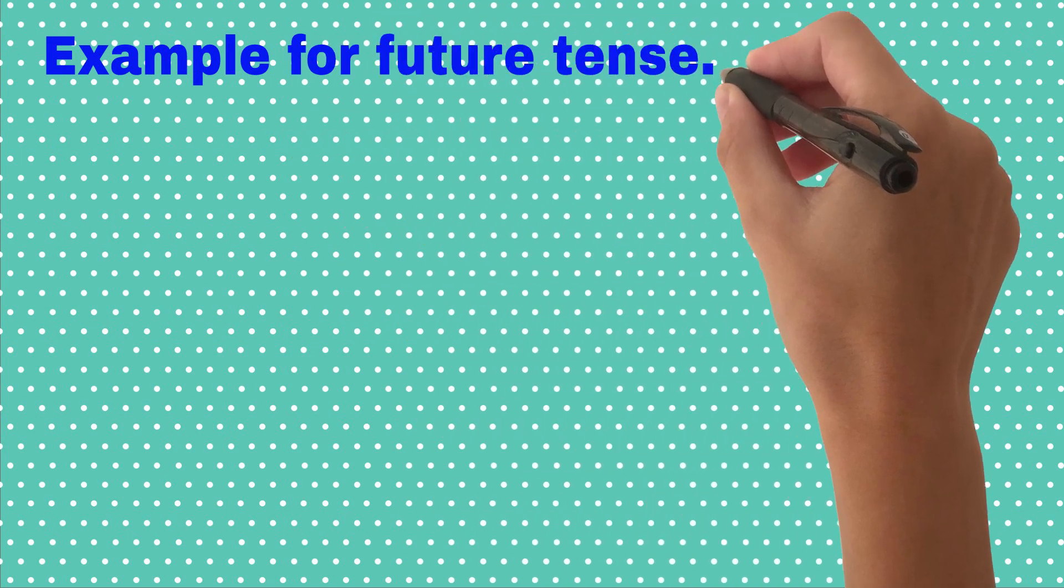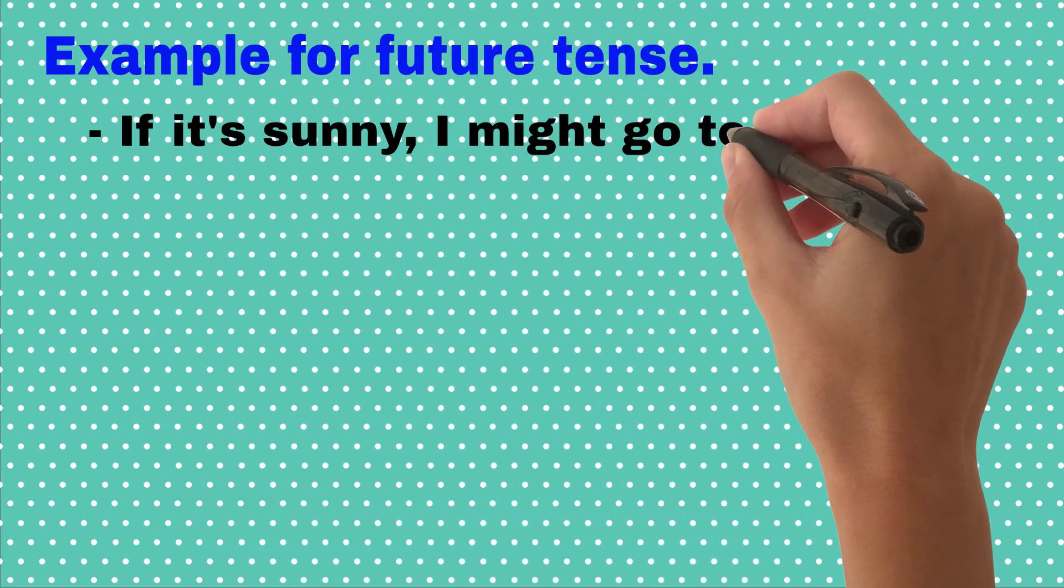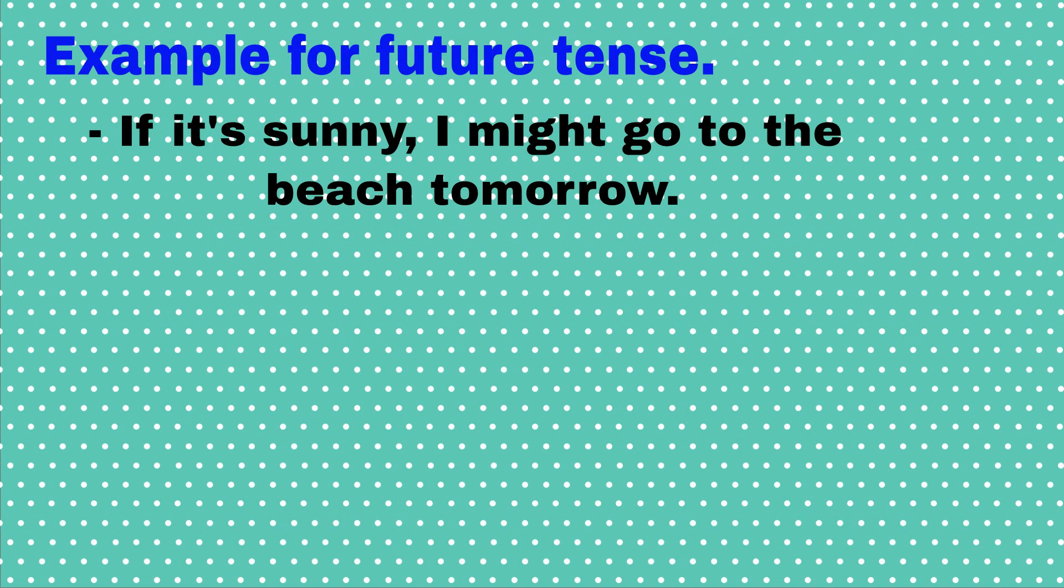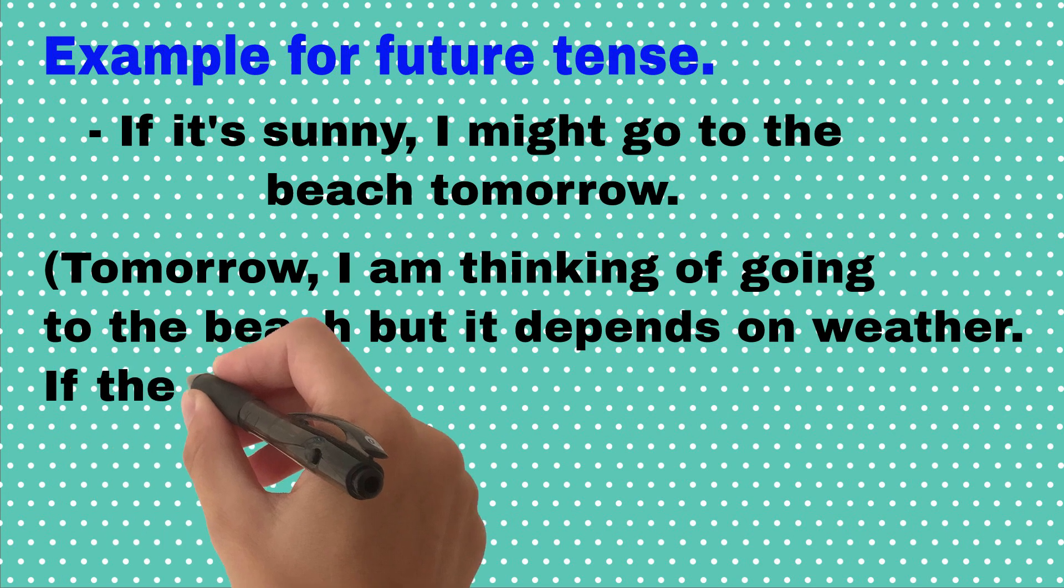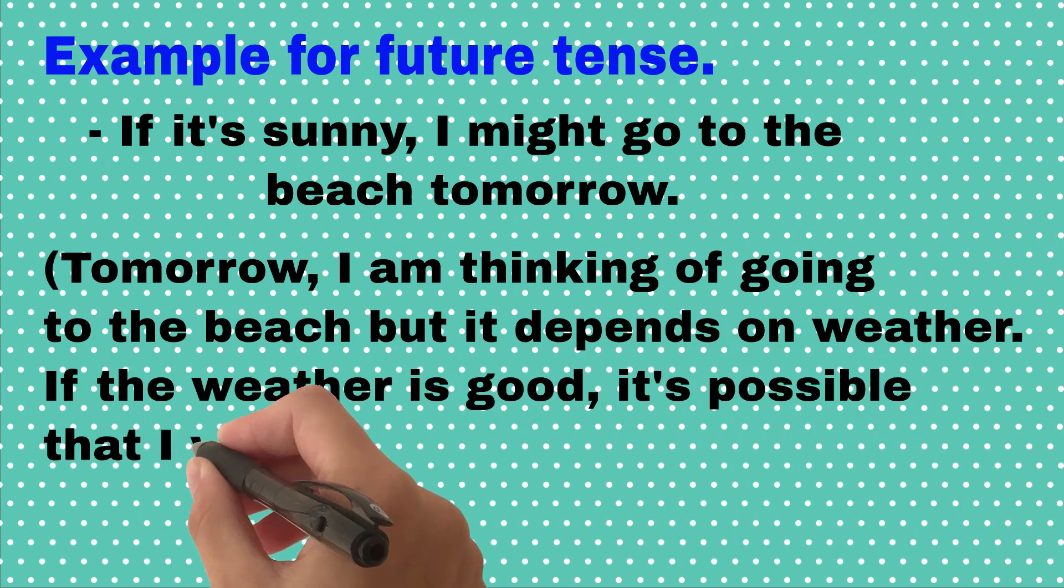Example for future tense. If it's sunny, I might go to the beach tomorrow. Tomorrow I am thinking of going to the beach, but it depends on weather. If the weather is good, it's possible that I will go.